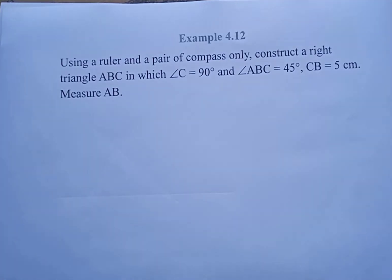Hello and welcome. Using a ruler and a pair of compass only, construct a right angle triangle ABC in which angle C equals 90 degrees, angle ABC equals 45 degrees, and CB equals 5 centimeters. Measure AB.